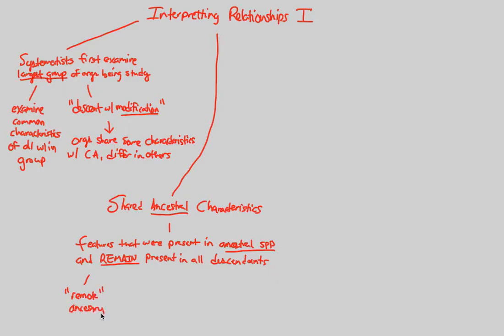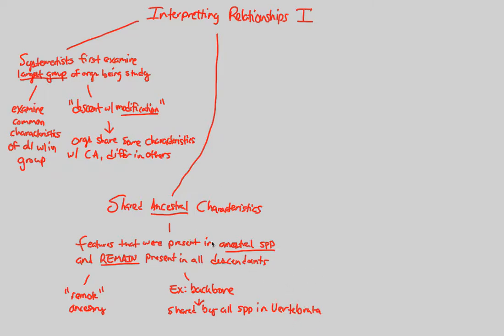A classic example of a shared ancestral characteristic is the backbone. The backbone is shared by all members — all the way back when the first backbone developed, it stayed within the entire diversity of life and has been shared by all species within the group in question. That large group in question is vertebrata. A systematist will look at vertebrata and notice there's a shared ancestral characteristic amongst all vertebrata: the backbone. It has persisted and remained ever since its inception at the ancestral species level.